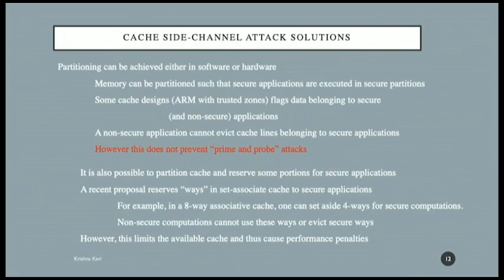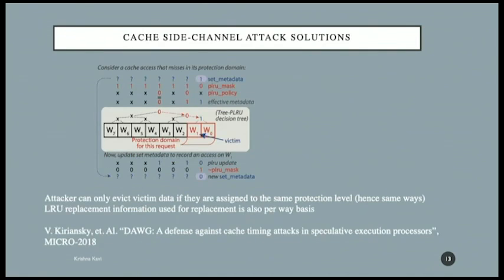Another way of dividing the cache is to partition it so that certain cache lines belong only to secure applications. A paper from MIT in December 2018 proposed using different lines within a set for secure and non-secure applications. In this example, there are eight ways — eight cache lines sharing one index. Ways W0 and W1 are allocated for secure applications; the others are not. You will never be able to touch those two lines or get any information about them. But again, prime and probe is not protected: when you prime, you fill the entire cache, and you can still detect that somebody evicted your lines.